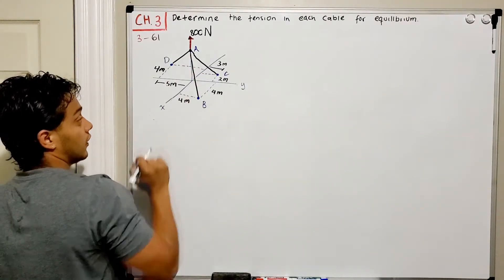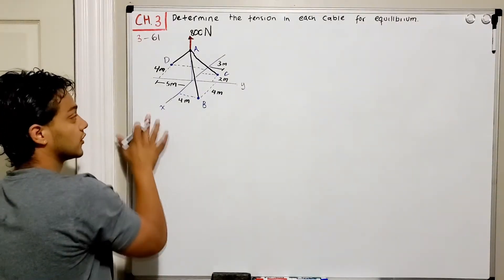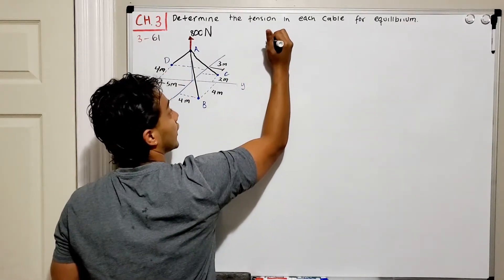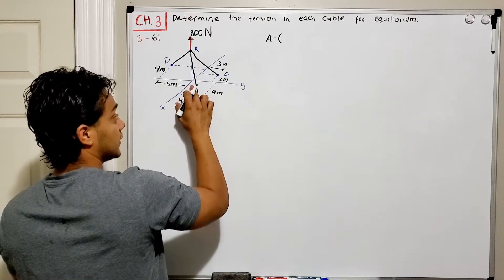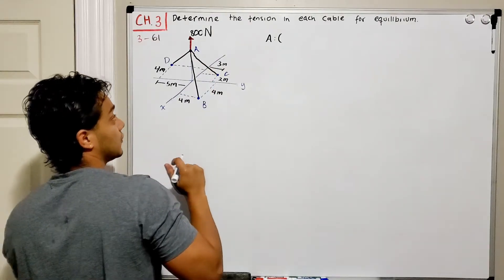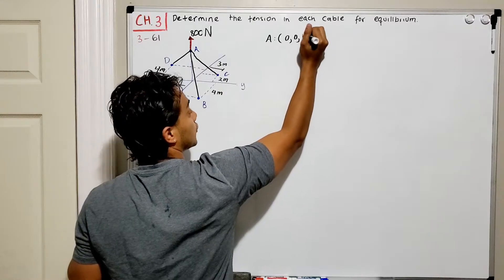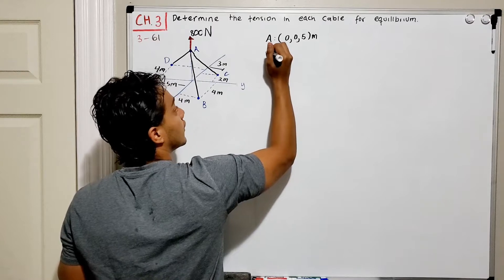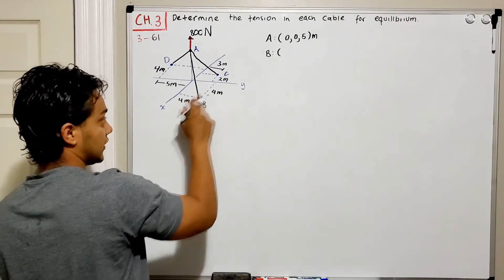We need three unit vectors, so we're going to define each of the points. Starting with point A: point A is exactly at the XY origin but has an altitude of 5 meters. Point B is located at the XY plane with four on the X